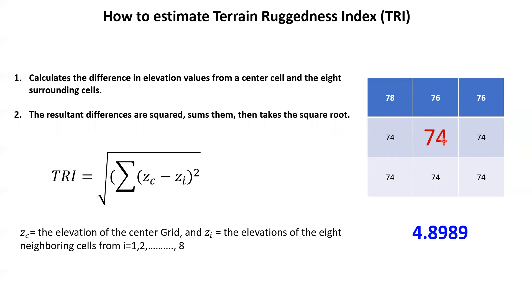For the first step, the difference between this value 74 minus 78 is four, so four by four equals 16. Then plus the square of the difference between this one and this one, and the same for each surrounding pixel. Based on this equation, TRI equals the square root of the summation of (ZC minus ZI) squared, where ZC is the center pixel elevation and ZI is each of the eight surrounding pixels, squared to avoid any negative values.